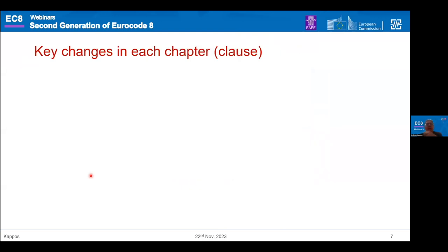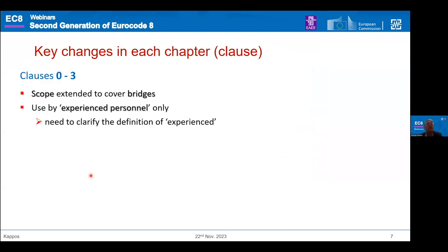The main part of this presentation covers the key changes in each chapter. I will introduce these changes very briefly. In the basic clauses, the important additions or changes include the scope being extended to bridges, which is very, very important. As you probably know, the existing code does not talk about bridges at all, which was a major omission.